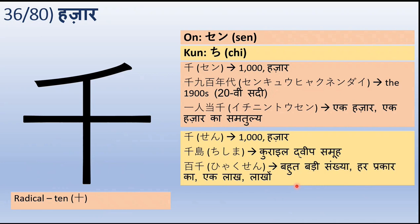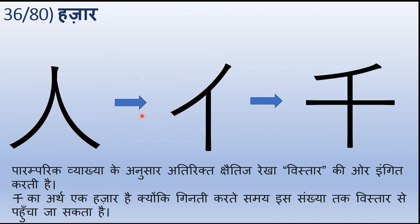Ye jo das ka radical hai usse aaya hai. Ye saaf hai kyunki ye das ka radical hai — usse bada hai. Aur ye iska stroke order hai. Ye kaise aaya hai — ye vakti ka radical hai, aur ye vakti radical ka variation hai. Ye ek extension hai, ye vistar hai, ye jo rekha hai is tarah se ye symbol aaya hai. Paramparik vyakhya ke anusaar, atirikt shakti rekha yaani ye jo horizontal line hai iska vistar — ye vistar ki or ingit karti hai. Aur Chi ka arth 1000 hai ya Sen ka arth 1000 hai, kyunki ginti karte samay is sankhya tak vistar se hi pahuncha ja sakta hai — is tarah se iska arth lagaya gaya hai.